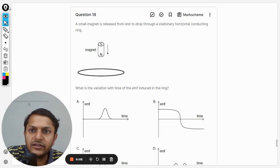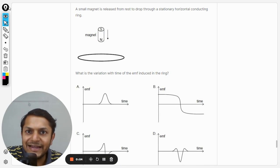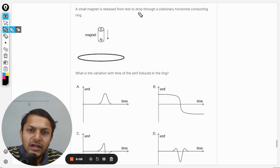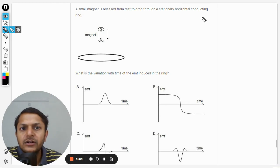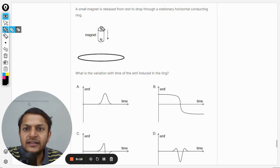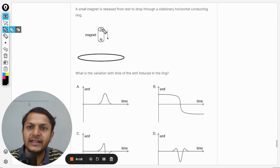Hey dear students, let us see what is there in this question. A small magnet is released from rest to drop through a stationary horizontal conducting ring. This is the magnet, this pole is north pole and the above one is the south one.